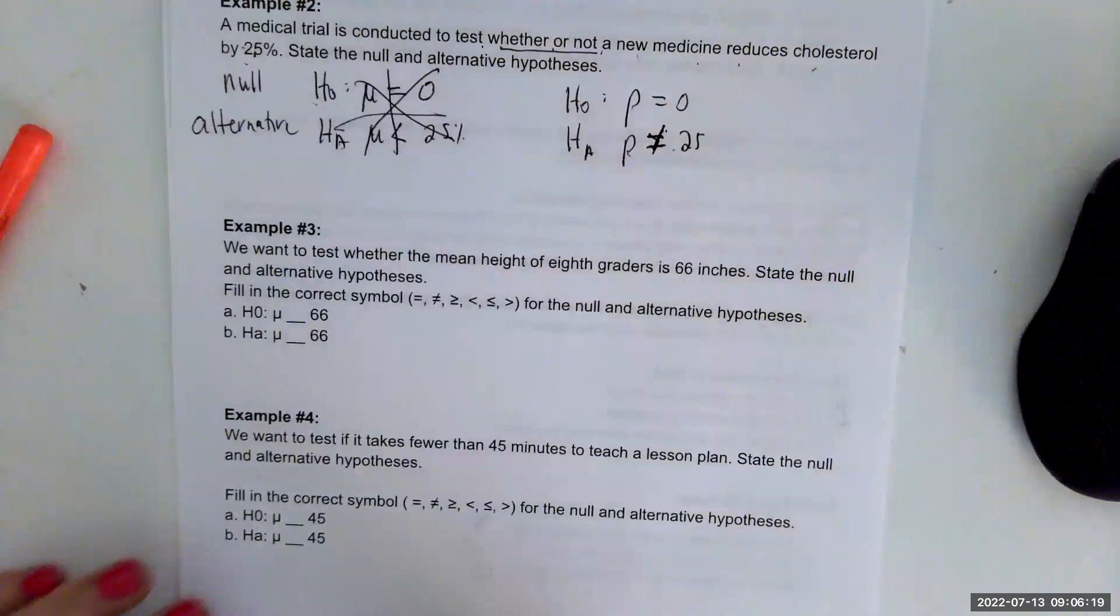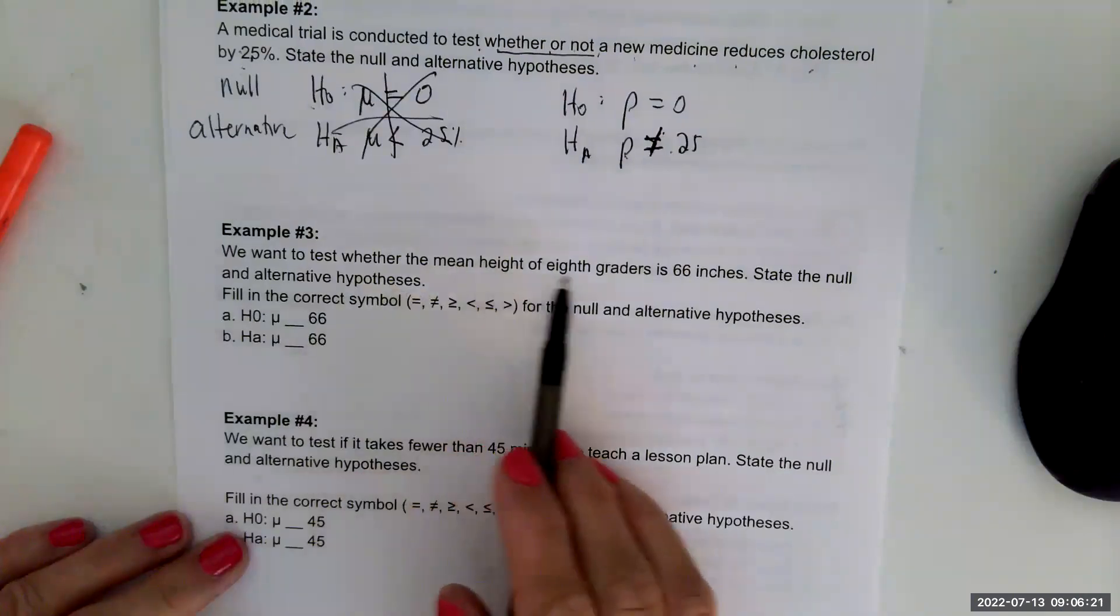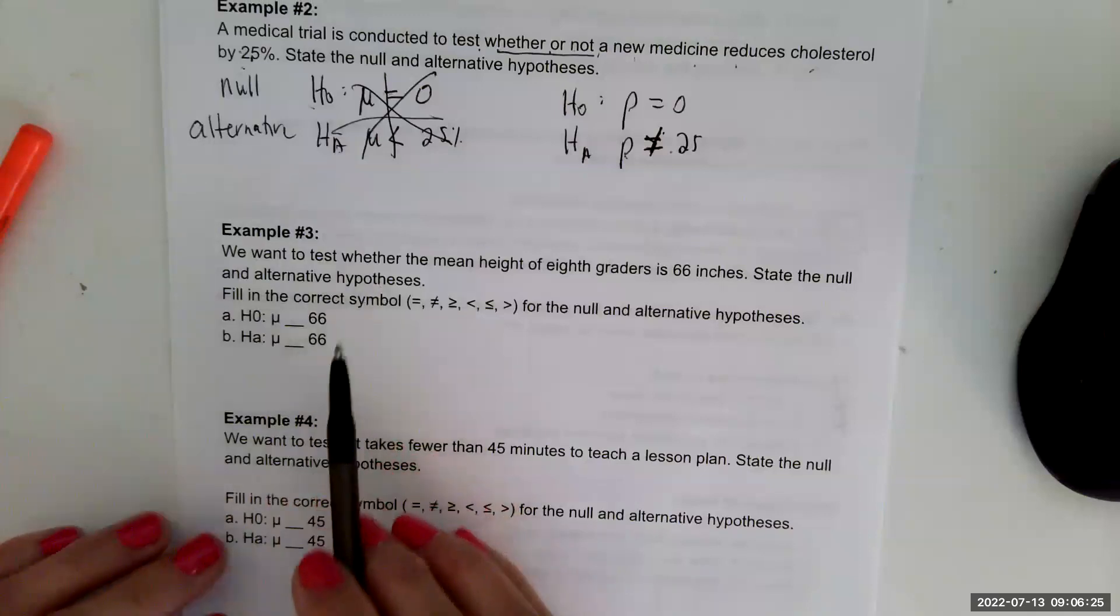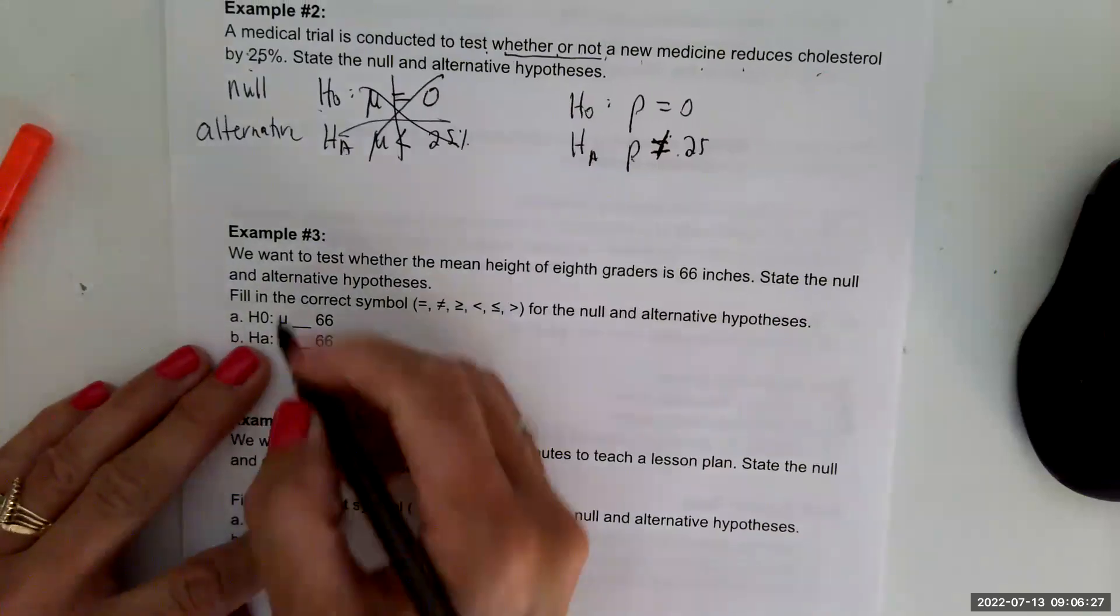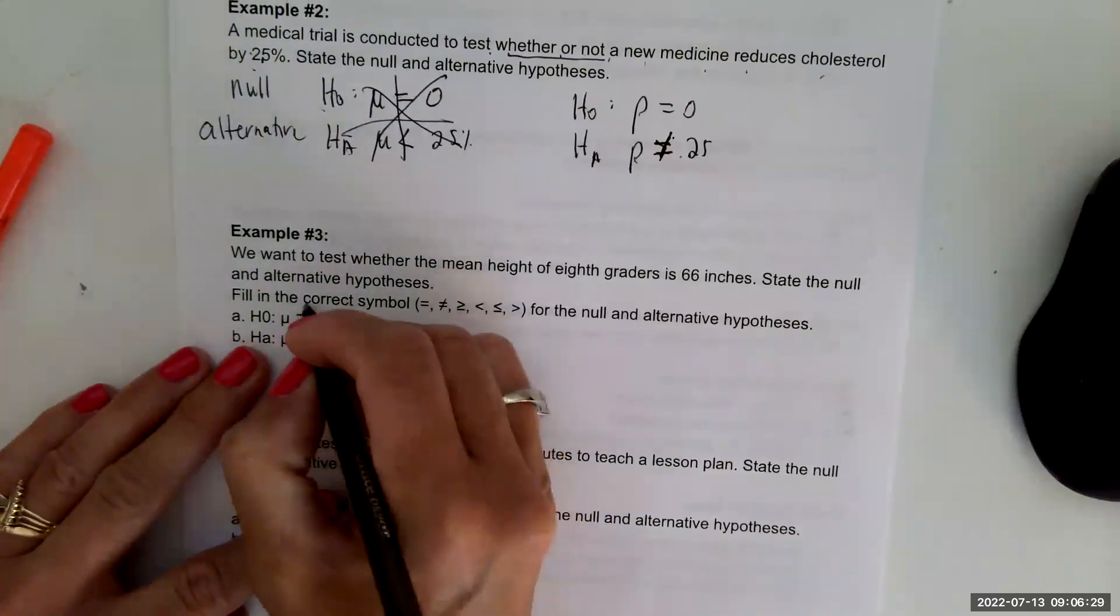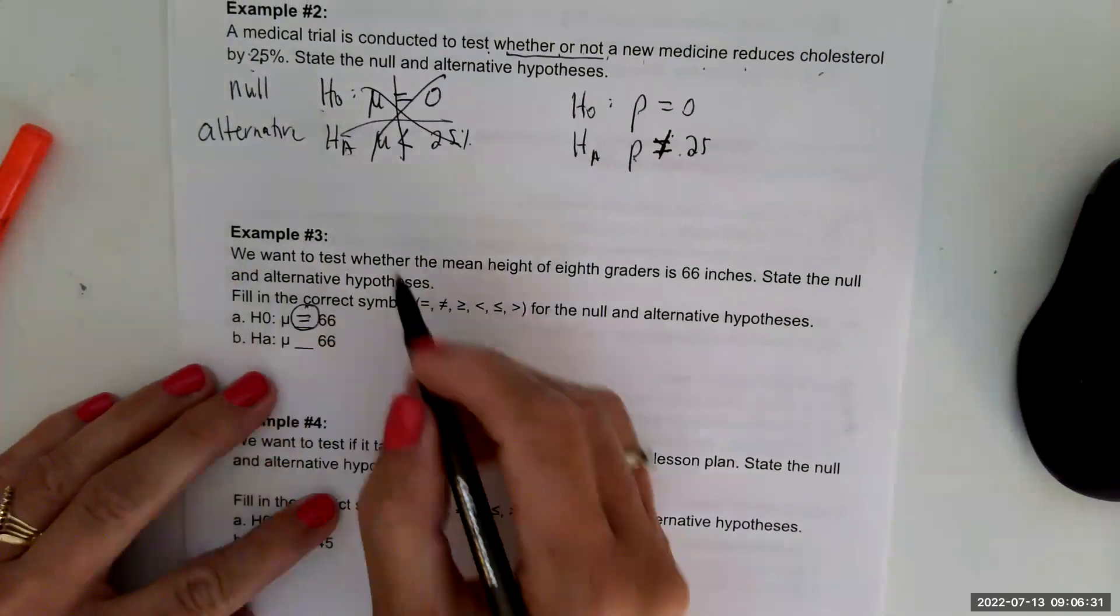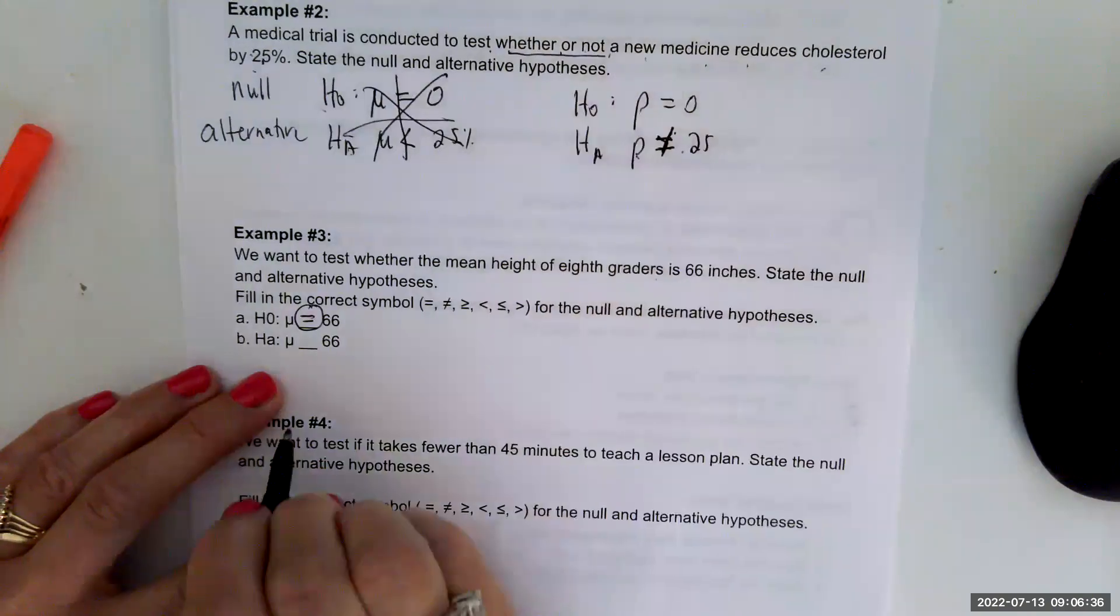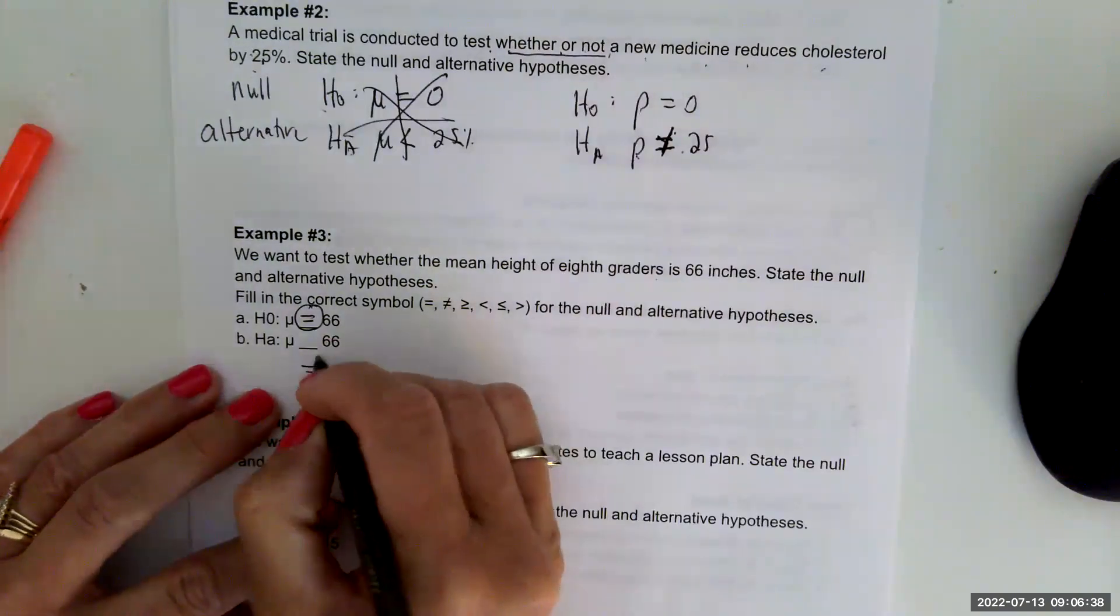Example three, we want to test whether the mean height of eighth graders is 66 inches. State the null and alternative hypotheses. So the null is it's equal to 66, and it says we want to test whether the mean height is 66, so that would be a not equal to.